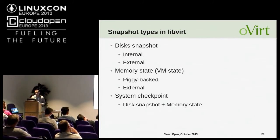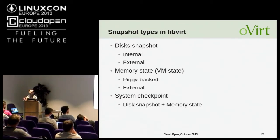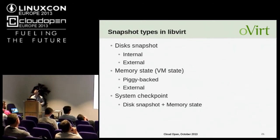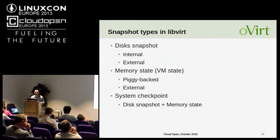The second type in LibVirt is a memory state snapshot, containing only memory data. There are two kinds: piggy-backed, where memory data is saved in the original disk volume (which must be a QCOW2 volume), and external, where memory data is saved in a separate volume. The third type is a system checkpoint — a combination of both — containing the state of both the disk and the memory.